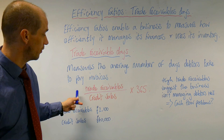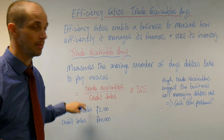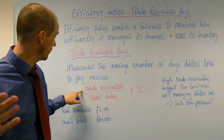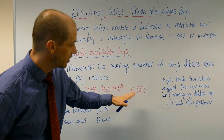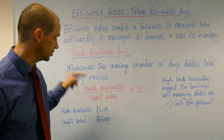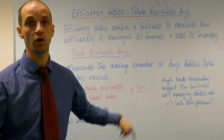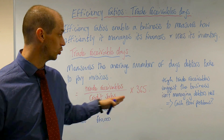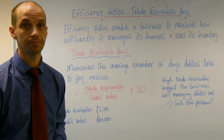Trade receivable days is calculated by taking your trade receivables from the balance sheet and dividing that by your credit sales from the income statement, then multiplying by 365. This gives us the number of days it takes on average to receive payment from your debtors.